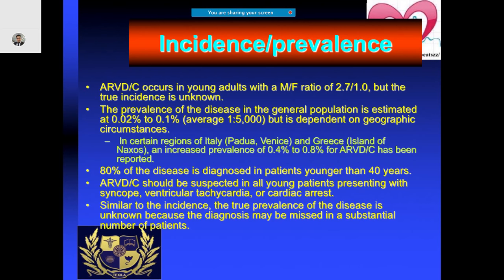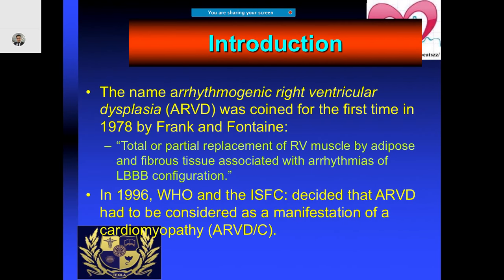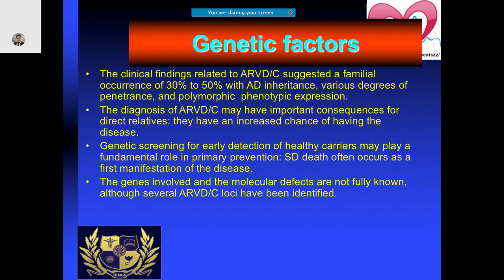Coming to the incidence, males are much more predisposed. In the general population, it is estimated that up to 0.1 percent of patients can have it, although in some islands especially in regions of Italy and Greece they are more common. Most of these patients are young and present with syncope, ventricular tachycardia, or even cardiac arrest. Up to 50 percent of those patients can have an autosomal dominant inheritance, which is why genetic screening is important.